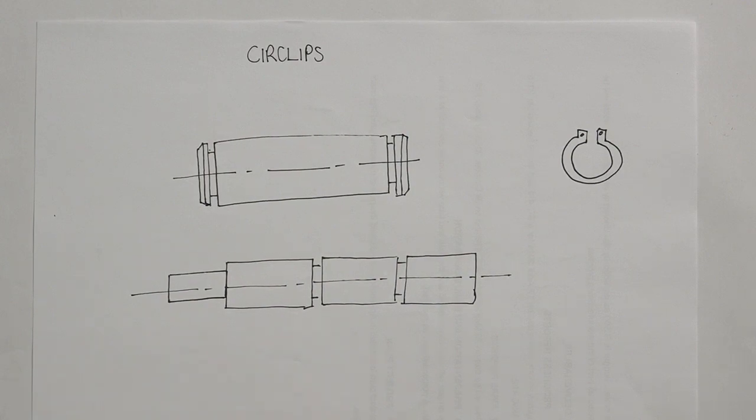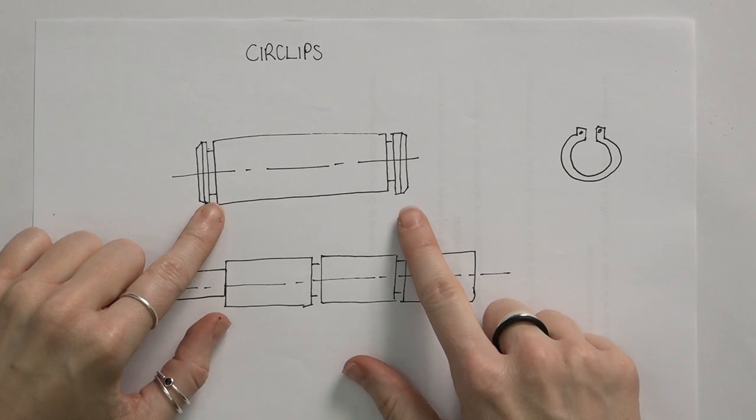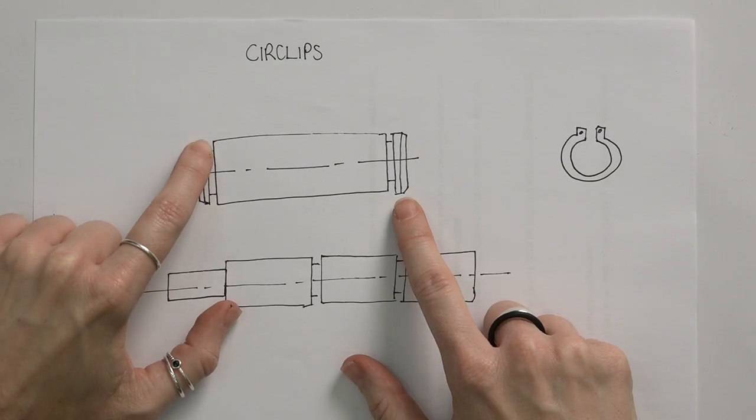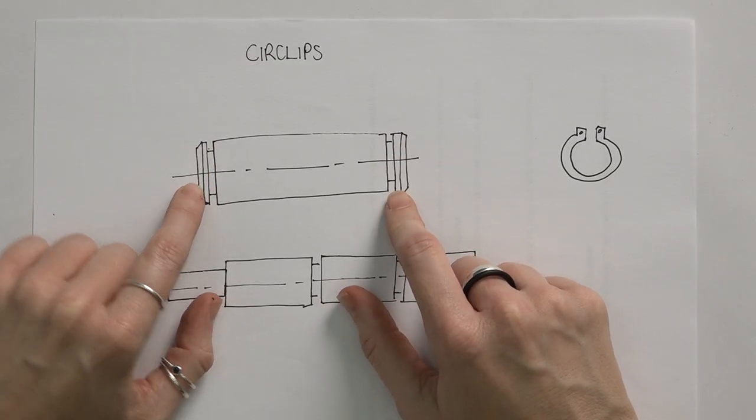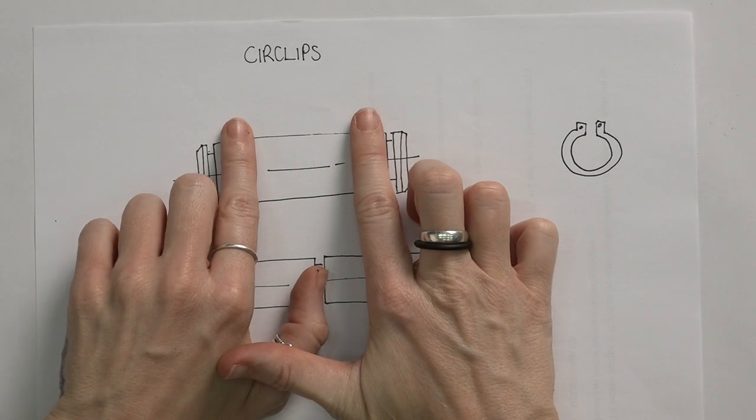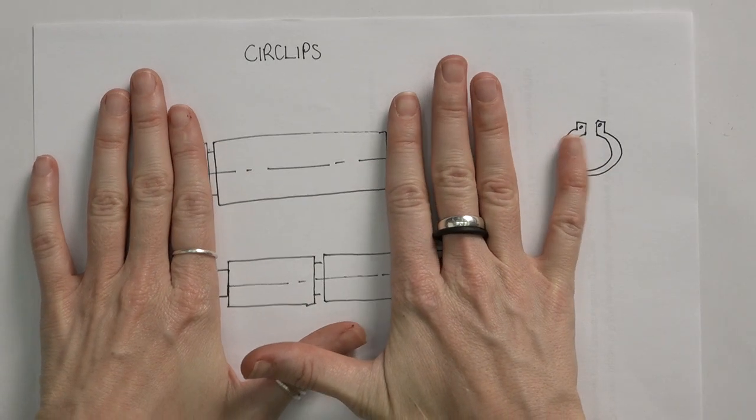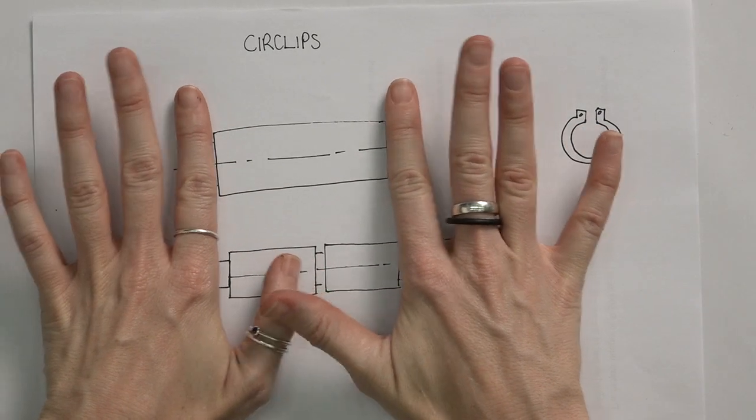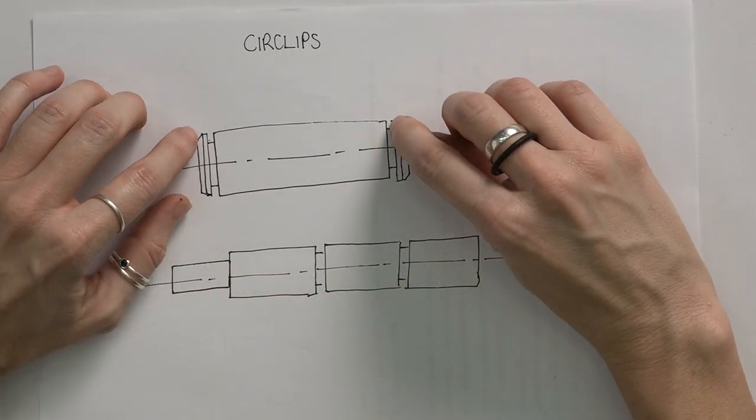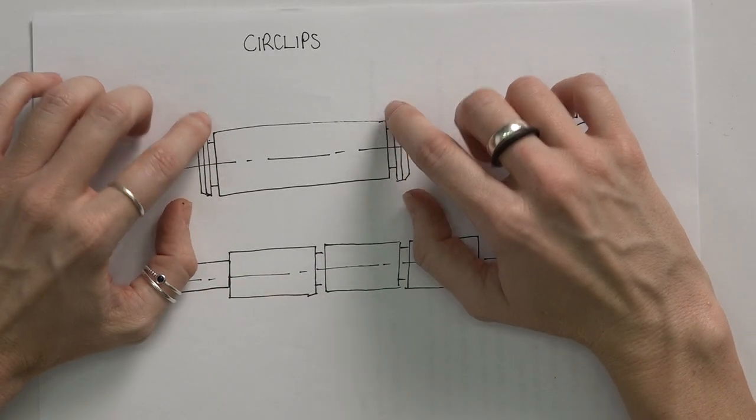Standard components: circlips. Circlips is another way to fix components together, so it's another fastening standard component. Now typically we know to use a circlip when we have for example a shaft that has small little neck pieces on the edges. So for example we'll have something happening on the inside and in order to make sure that whatever is assembled on the inside doesn't fall out on the outsides, we can add circlips in these little neck pieces.